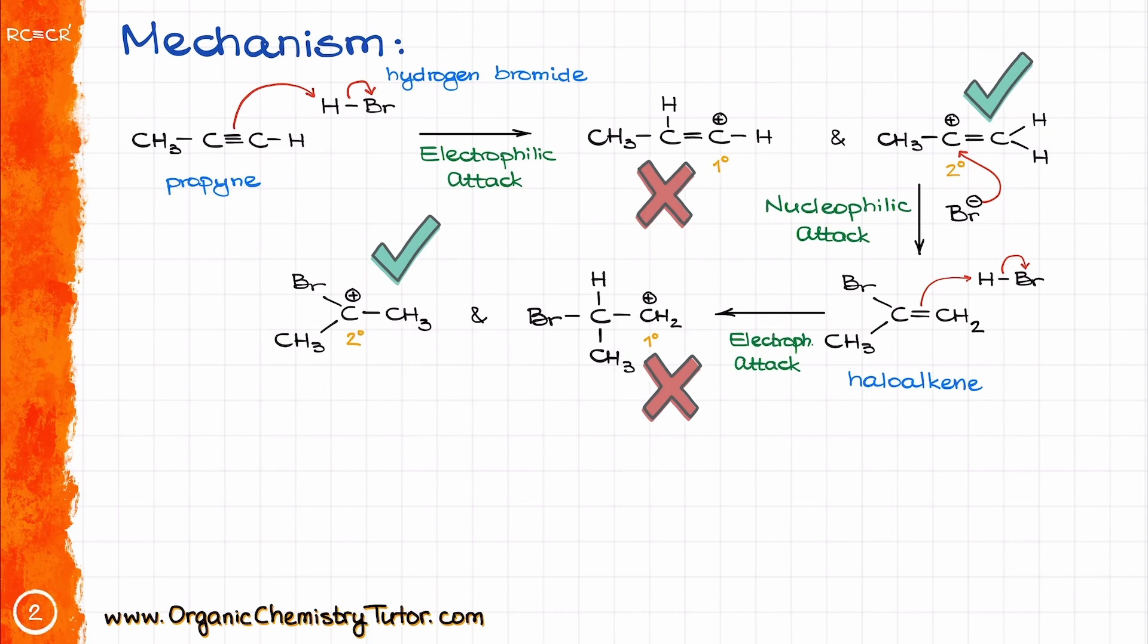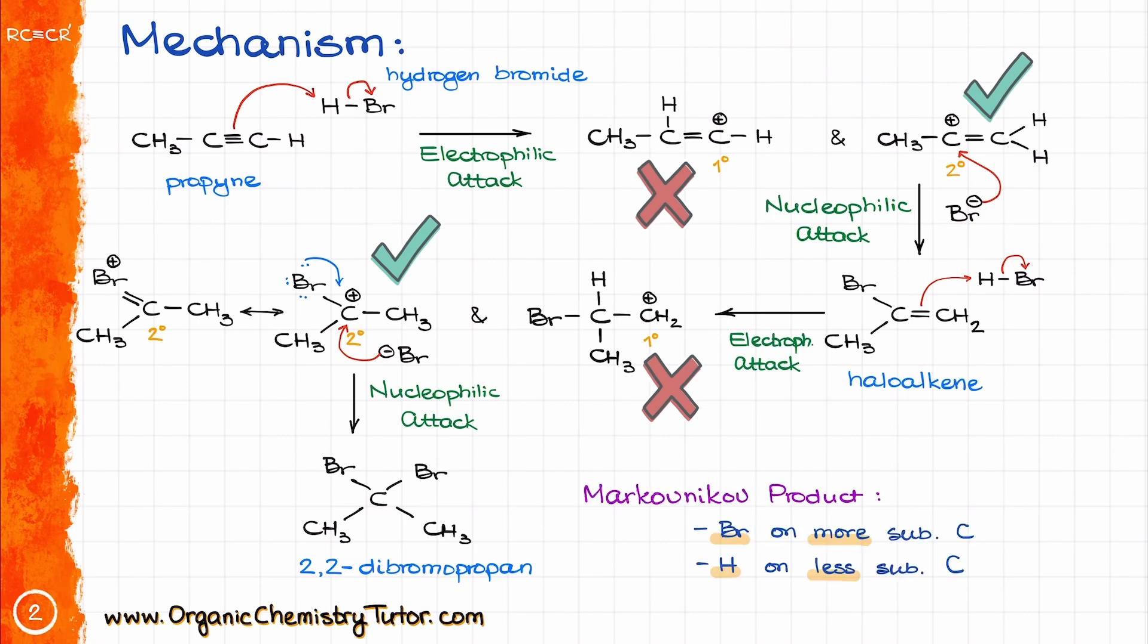Naturally, we would want to go with a secondary carbocation here. Not to mention that this carbocation is stabilized by the resonance with the bromine atom, and while this resonance might not be particularly strong due to the poor orbital overlap between carbon and bromine, it is nonetheless there. So, the next nucleophilic attack by the bromine anion will give us the final product. Notably both cases, the formation of my halfway product and my final product give me so-called Markovnikov product, where we have a halide that ends up on the more substituted carbon, and the hydrogen atom on the less substituted carbon. Pretty easy, right?